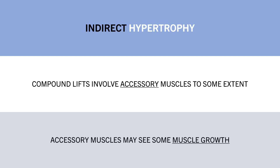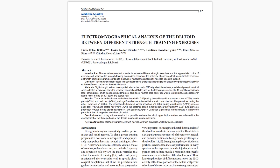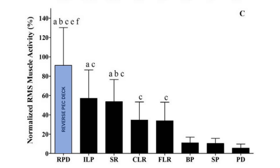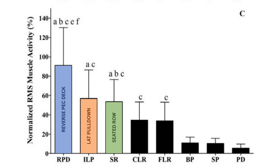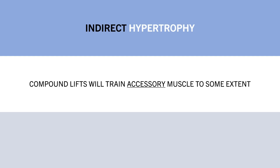For example, this study explored muscle activation of the delts across various different exercises. Trainees performed a 10RM set of multiple different upper body exercises, and muscle activation of the different regions of the deltoid were recorded. Looking at the rear deltoid muscle activation graph, the reverse pec deck resulted in the greatest activity, which is expected since it is a direct rear deltoid exercise. However, indirect exercises like the lat pull-down and seated row also resulted in quite high activation of the rear delts. Although this study didn't directly measure muscle growth, it suggests that compound lifts will likely provide somewhat of a stimulus for accessory muscles too, making training more time efficient.